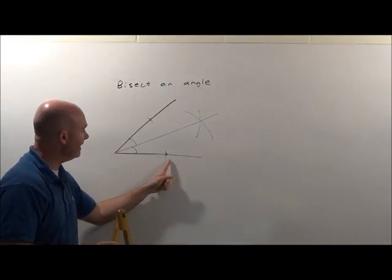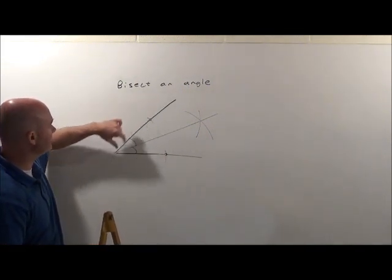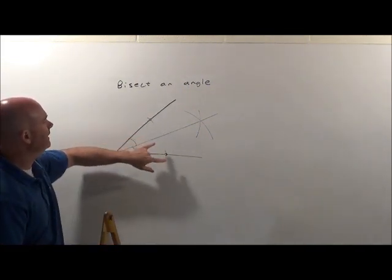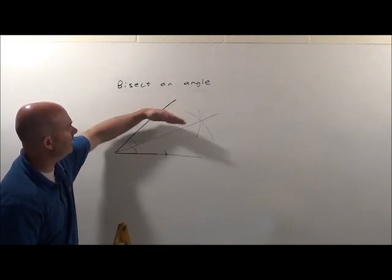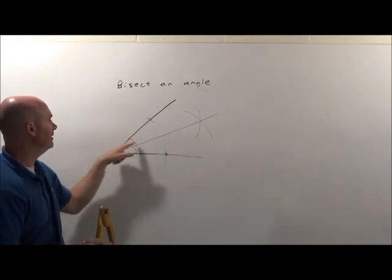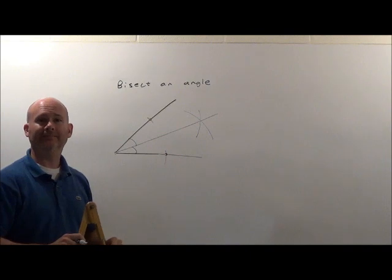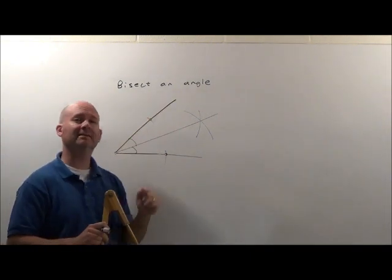We started at the vertex, made two points that were the same distance away from that vertex, and then drew two arcs outside over there from these two points, and then drew our line. There is how we bisect an angle.